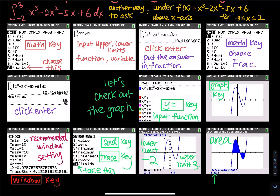So for the lower limit, hit negative 2. Note that the negative key and the minus key are not the same. The negative key is right next to the decimal point, shown in parentheses. If you hit the minus key instead, you will see a syntax error. Remember: negative, not minus. From negative 2 to positive 3.